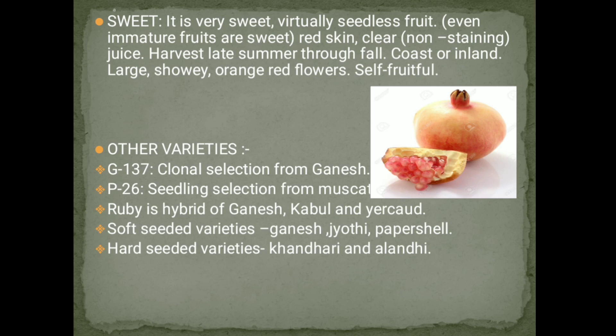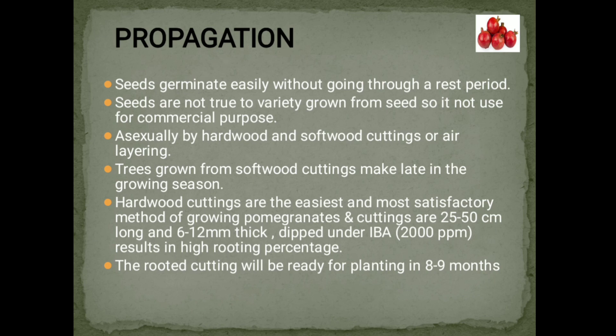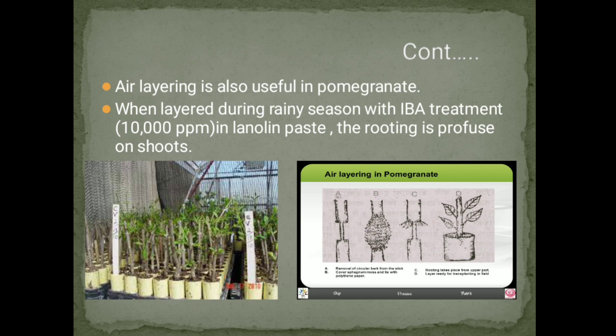Propagation. Seeds germinate easily without going through a rest period, but seeds are not true to variety when grown from seed, so they are not used for commercial purposes. Asexually, propagation is done by hardwood and softwood cuttings or by air layering. Hardwood cuttings are the easiest and most satisfactory method; cuttings are 25–50 cm long and 6–12 mm thick. Dipping in indole butyric acid results in high rooting percentage. Rooted cuttings will be ready for planting in 8–9 months. Air layering is also useful; when layered during the rainy season with indole butyric acid treatment in lanolin paste, rooting is profuse on shoots.